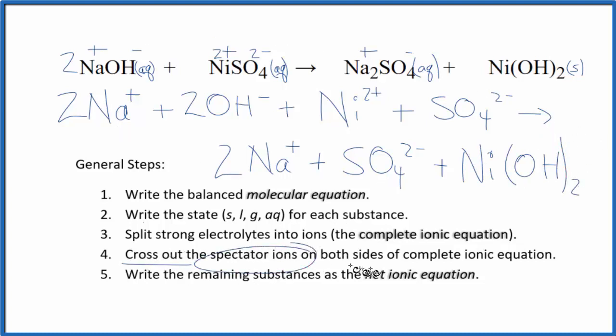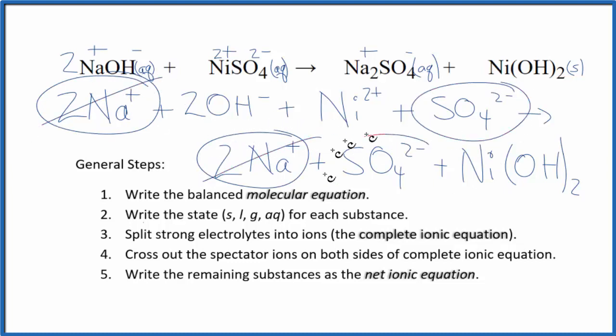Now we can cross out spectator ions. They're on both sides of the complete ionic equation. They haven't changed, so we're really not interested in them. In the reactants here, I see I have two sodium ions, and in the products, I have these two sodium ions. Let's get rid of those.